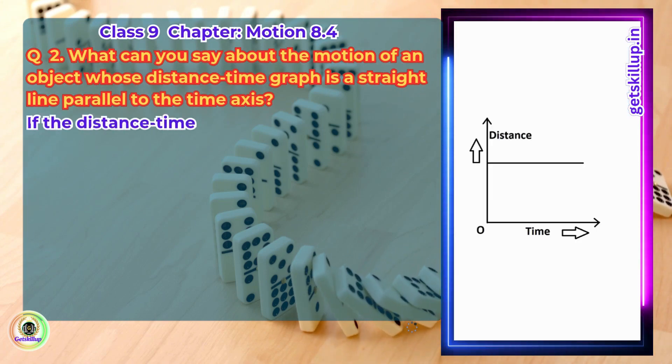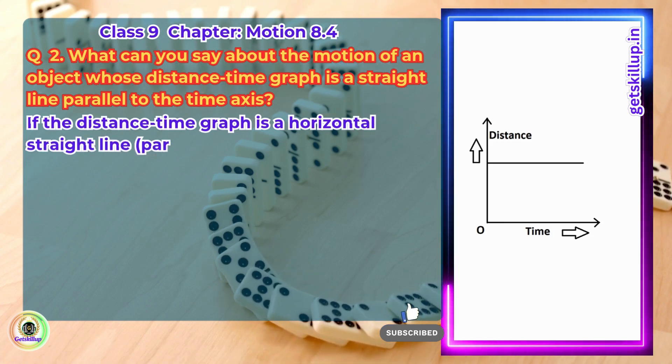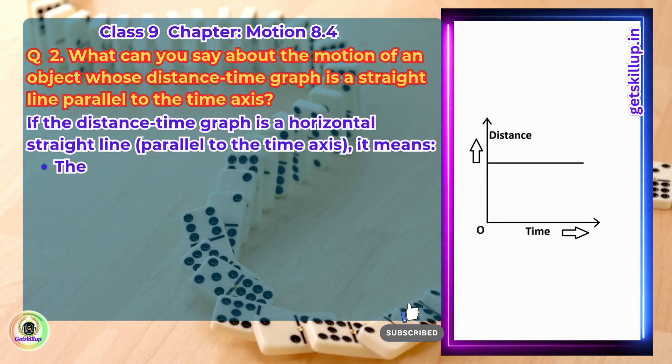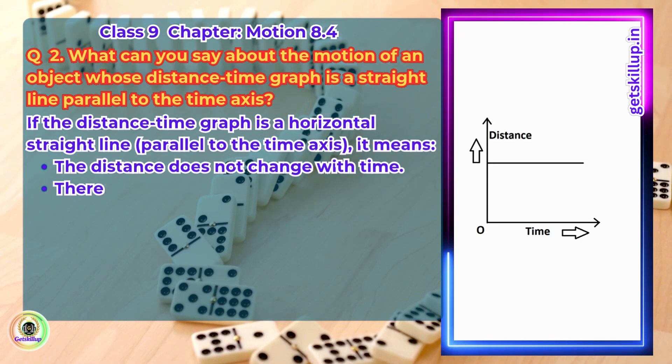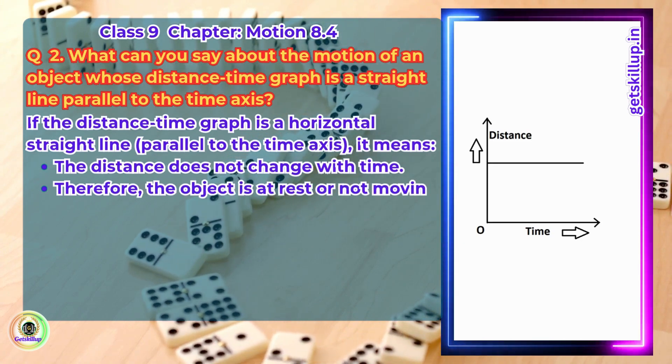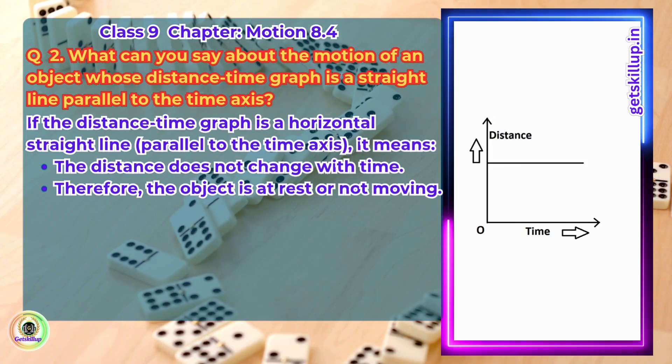Answer: If the distance-time graph is a horizontal straight line parallel to the time axis, it means the distance does not change with time, therefore the object is at rest or not moving.